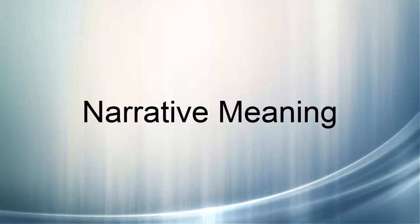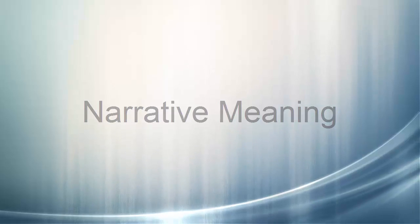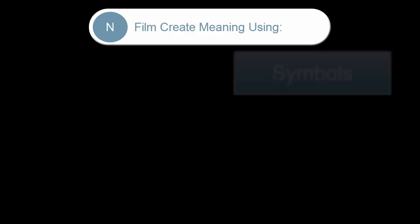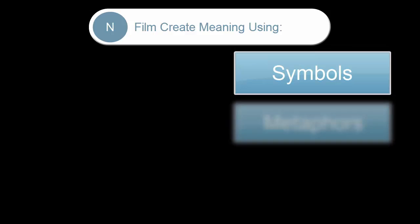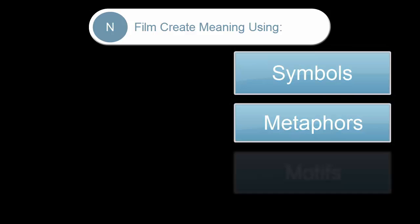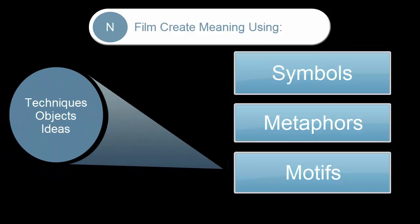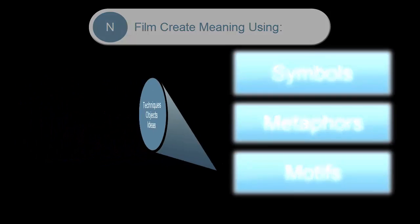Narrative meaning: Films are not self-enclosed entities, but make statements about the world in which we live. Films create meaning through the use of symbols, metaphors, and motifs, which are repeated techniques, objects, or thematic ideas.